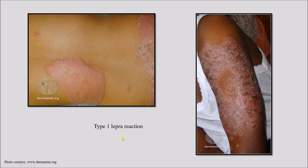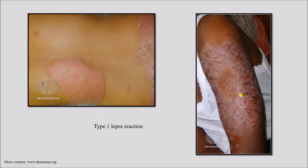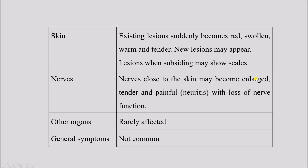In type 1 leprosy reaction, the clinical features in skin include: existing lesions suddenly become red, swollen, warm, and tender; new lesions may appear; and lesions when subsiding may show scales. Nerve close to the skin may become enlarged, tender, and painful — features of neuritis — and there may or may not be any loss of nerve function. Other organ involvement and general symptoms are not very common.